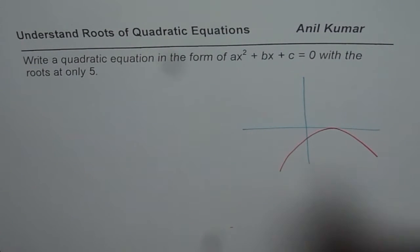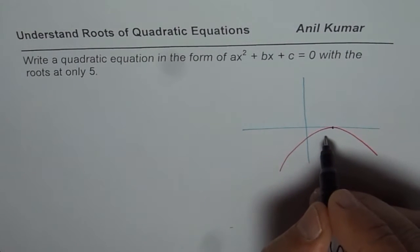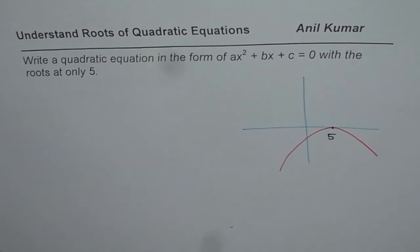Since it turns, that means we have two roots at this point. In our case, that point is at X equals to 5. Do you see that?